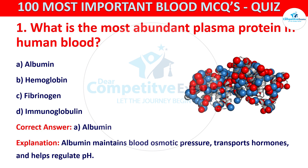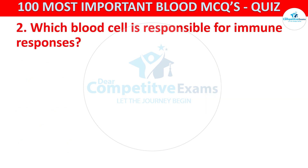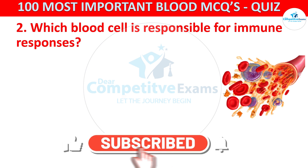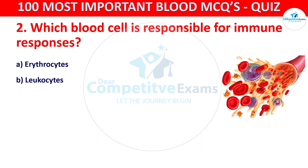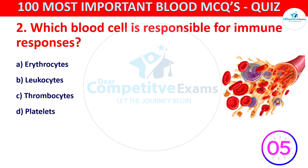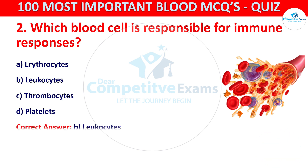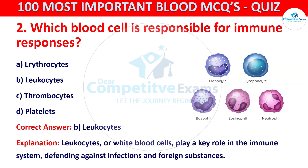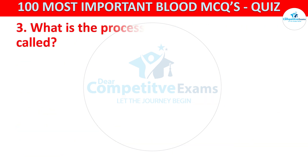Question number two: which blood cell is responsible for immune responses? Your options are erythrocytes, leukocytes, thrombocytes, or platelets. The correct answer is B, that is leukocytes. Leukocytes, also called white blood cells (WBCs), play a key role in the immune system defending against infection and foreign substances.